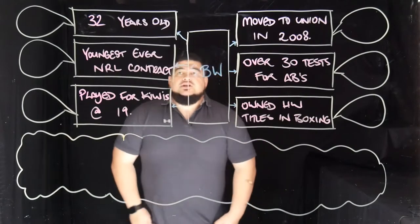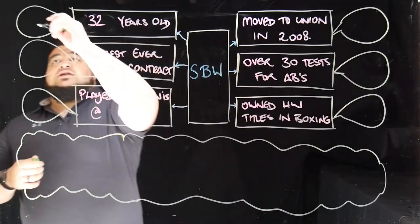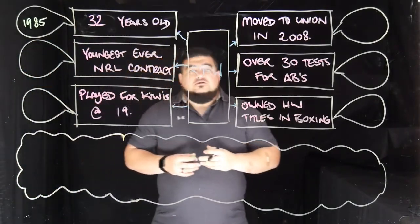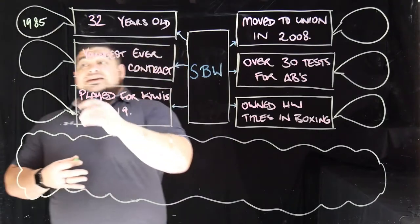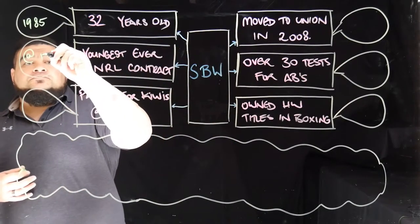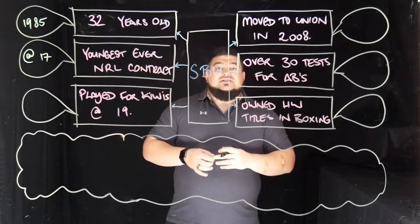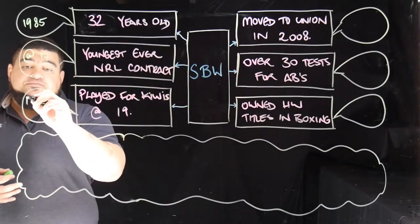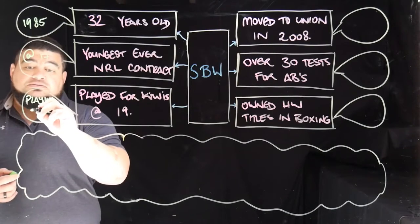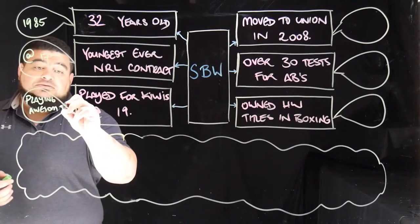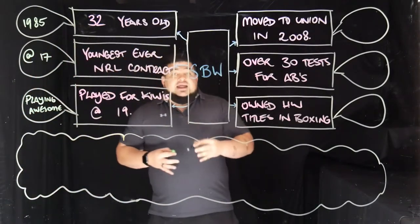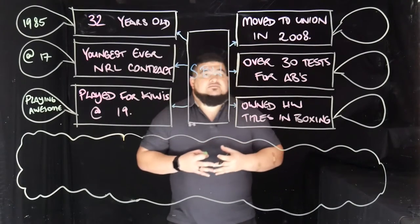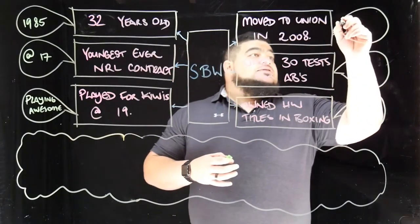Sunny Bill is 32 years old because he was born in 1985. He got the youngest NRL contract because he was signed at 17. He played for the Kiwis at 19 because he was really carving up in the NRL — playing awesome footy for the Bulldogs. In 2008 he moved to union because of contract issues — salary cap issues.